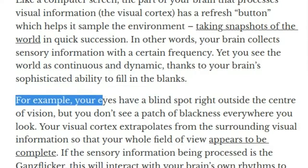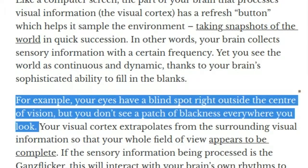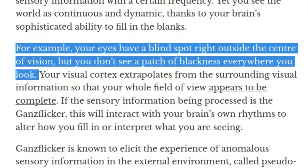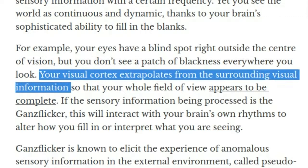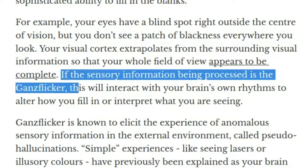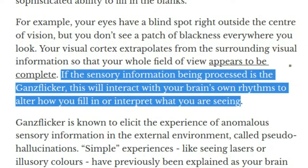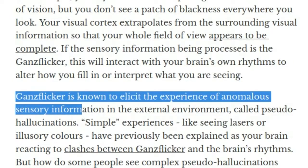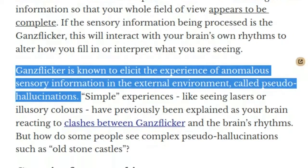For example, your eyes have a blind spot right outside the center of vision, but you don't see a patch of blackness everywhere you look. Your visual cortex extrapolates from the surrounding visual information so that your whole field of view appears to be complete. If the sensory information being processed is the GANs flicker, this will interact with your brain's own rhythms to alter how you fill in or interpret what you are seeing. GANs flicker is known to elicit the experience of anomalous sensory information in the external environment, called pseudo-hallucinations.